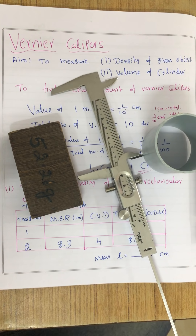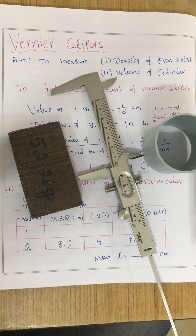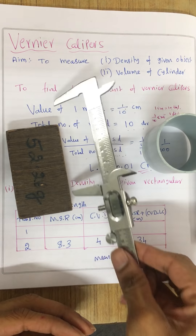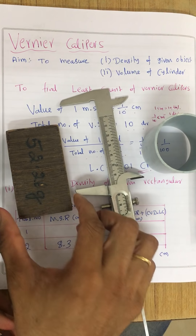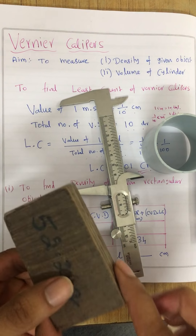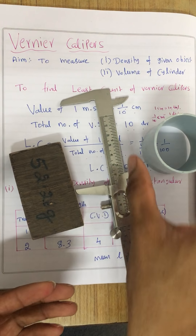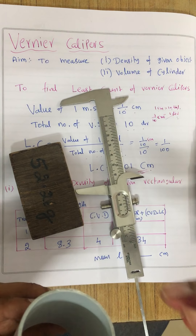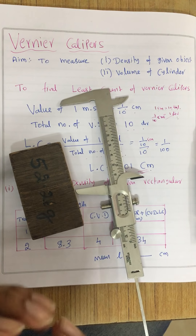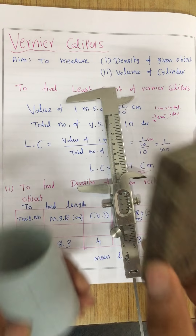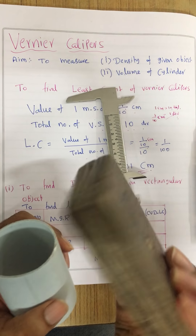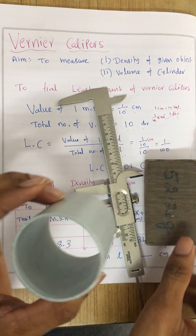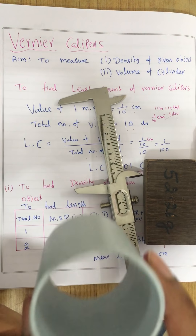Hello, welcome to this lecture. Are you worried about vernier calipers? Here I am with a solution. A nice vernier calipers here, and these are the objects: a rectangular object and a cylinder. The aim of this experiment is to find out the density of this given rectangular object as well as the volume of the given cylinder.